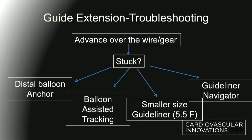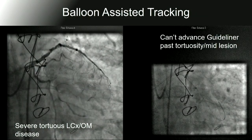So how do you deliver this guide extension? You do it over a wire — you already have the vessel wired. Oftentimes you have gear in the vessel as well, a balloon or even a stent. But if there's tortuosity and you can't deliver the guide extension where you need to go, there are a couple of tricks. One is to use a distal anchor balloon. Another commonly used technique is balloon-assisted tracking. You can also use a smaller-size GuideLiner — a 5.5 French inside a 6 French, or even a 6 French GuideLiner inside an 8 French guide — or you can use a GuideLiner Navigator.